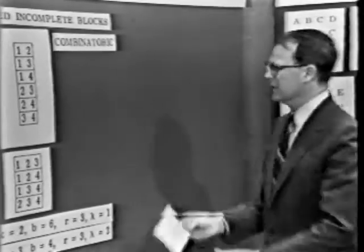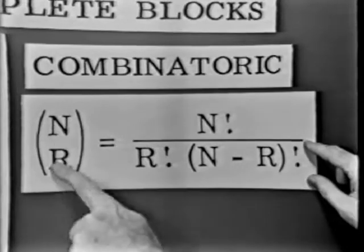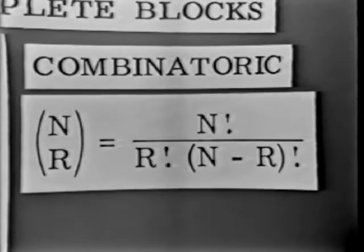So we call them combinatoric designs. Recall your combinations formula. The combinations of n things taken r at a time is equal to n factorial divided by r factorial times n minus r factorial.